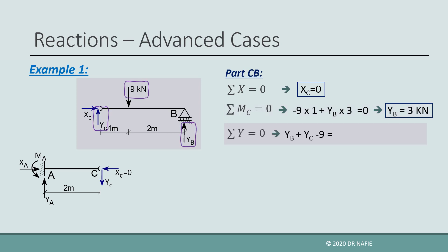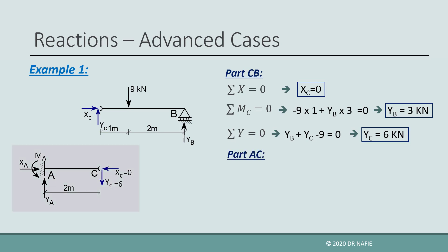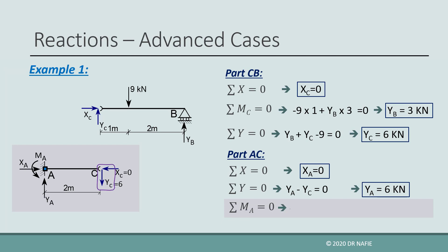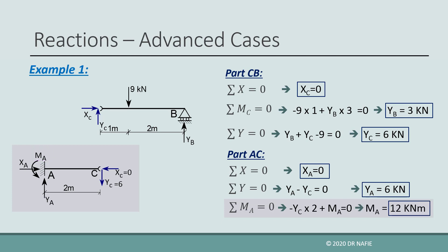Next, we apply sigma Y equals zero to obtain the value of YC as 6 kN. Now that XC and YC have been evaluated, part AC will have only three unknowns: XA, YA, and MA. By applying sigma X equals zero, XA is found to be zero. By applying sigma Y equals zero, we obtain the value of YA as 6 kN. Finally, by taking the sum of moments about point A, the equation will have two terms: negative YC multiplied by 2 m arm, and positive MA which is not multiplied by any arm since it is a moment. Solving the equation gives MA equals 12 kN·m.